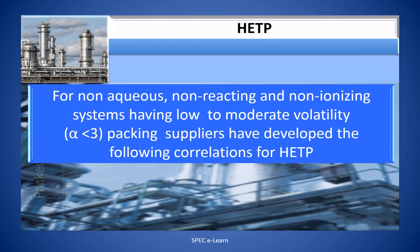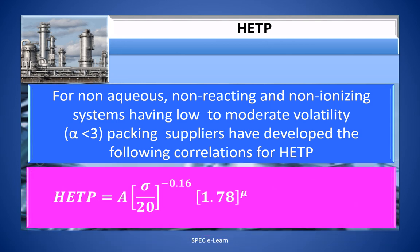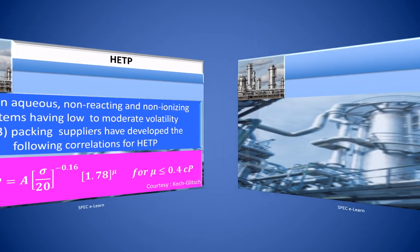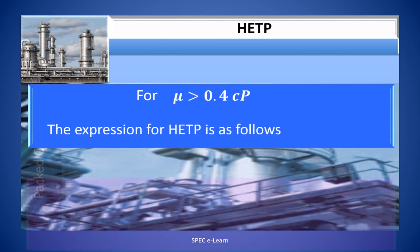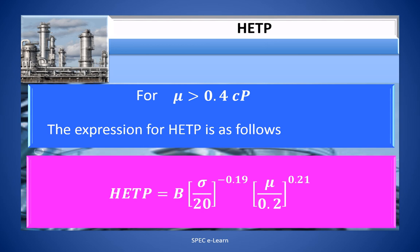For non-aqueous, non-reacting and non-ionizing systems having low to moderate volatility (that is, alpha less than 3), the packing suppliers have developed the following correlations for HETP. For μ ≤ 0.4 cP: HETP = A × (σ/20)^(−0.16) × 1.78^μ. For μ > 0.4 cP: HETP = B × (σ/20)^(−0.19) × (μ/0.2)^(0.21).